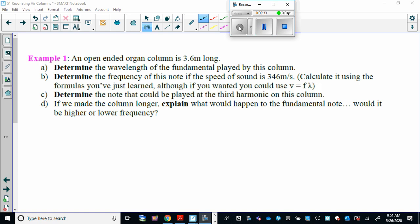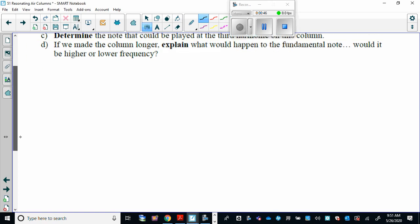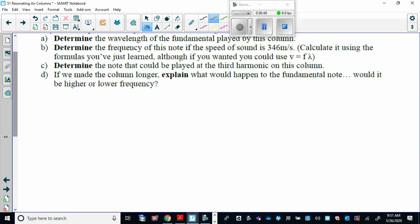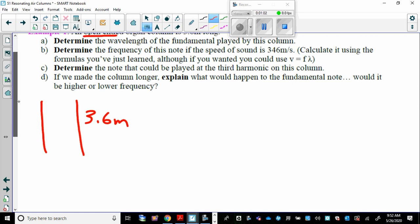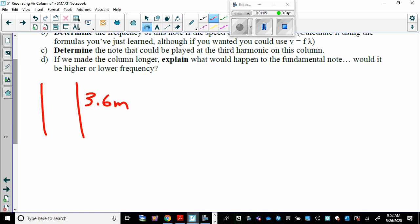In this example we have an open-ended organ column that's 3.6 meters long. Determine the wavelength of the fundamental. The fundamental is the smallest wavelength that will create a sound. So here's our pipe, 3.6 meters long. The first thing we need to acknowledge is that it's open-ended. So if it's an open-ended column, we know from the previous lesson that the smallest wavelength that will fit in an open-ended column is half a wavelength, like that, one half of a wavelength.